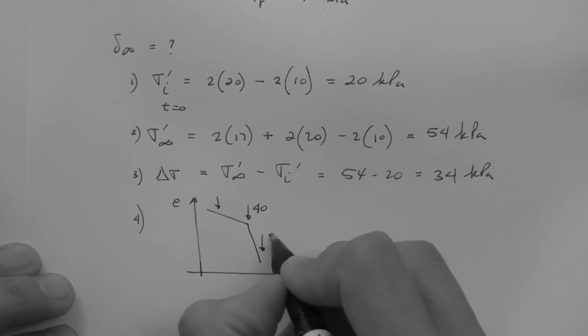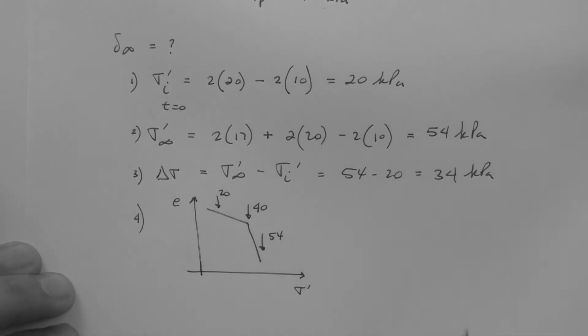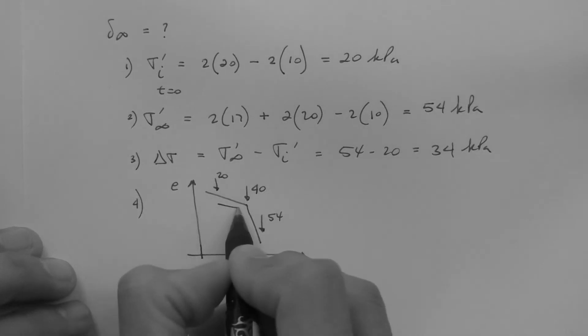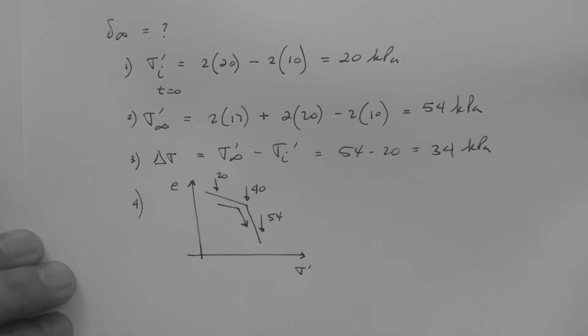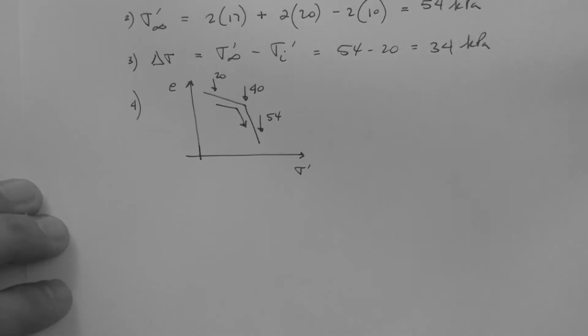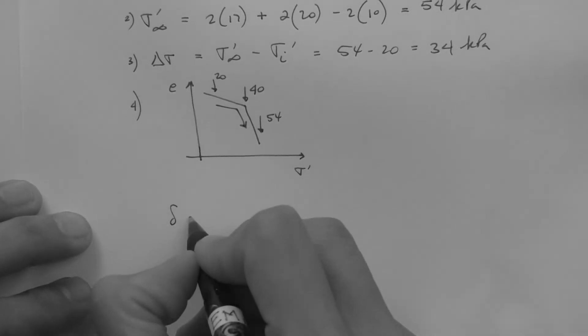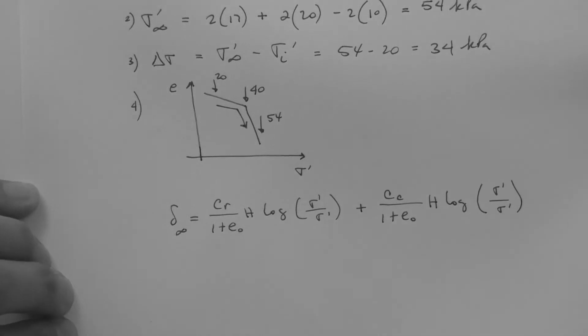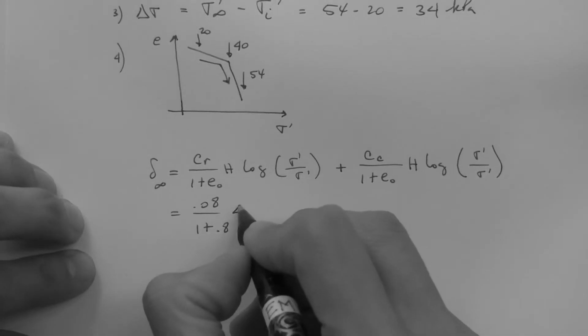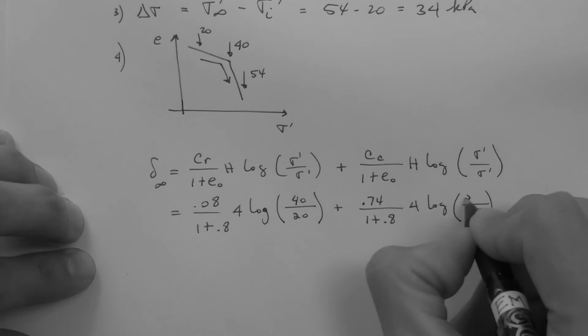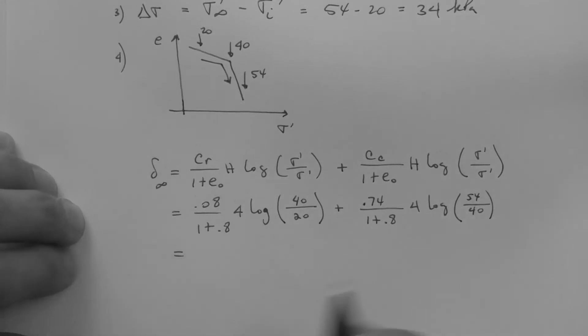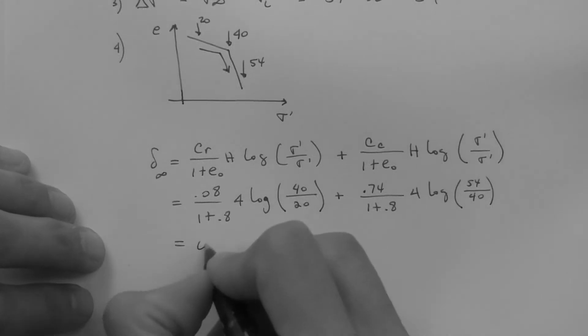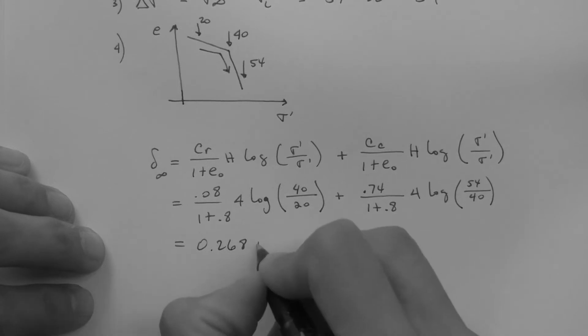So 54 is here, 20 is here. The soil will deform like this, therefore we have to use both portions of the equation. Let's write it out. 0.268 meters.